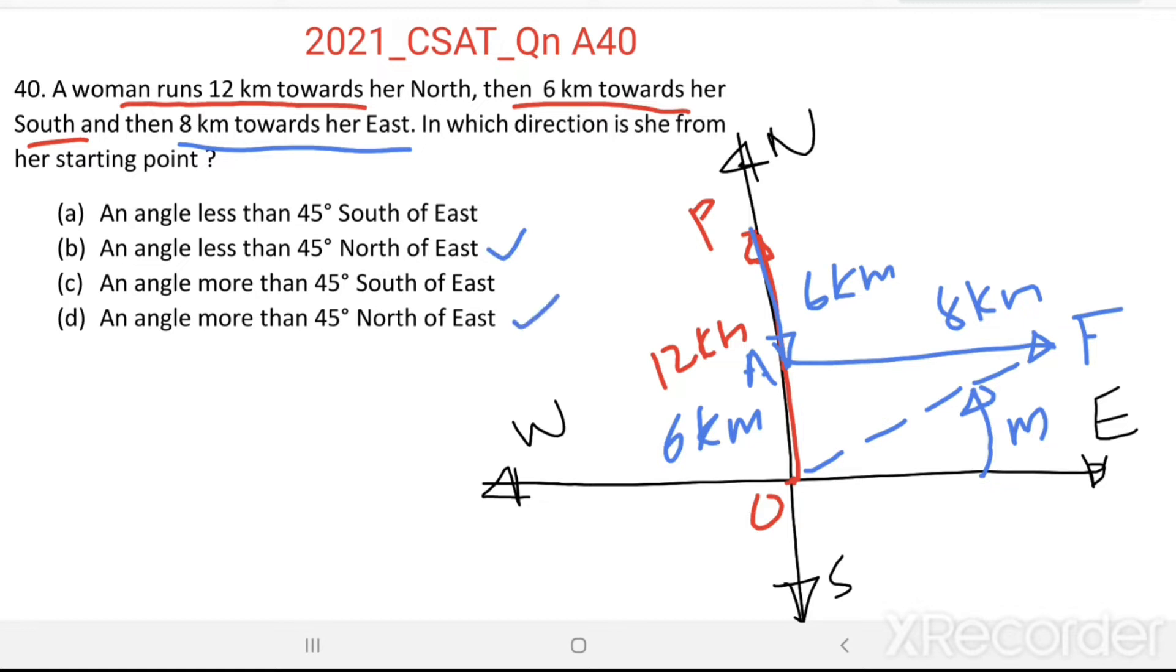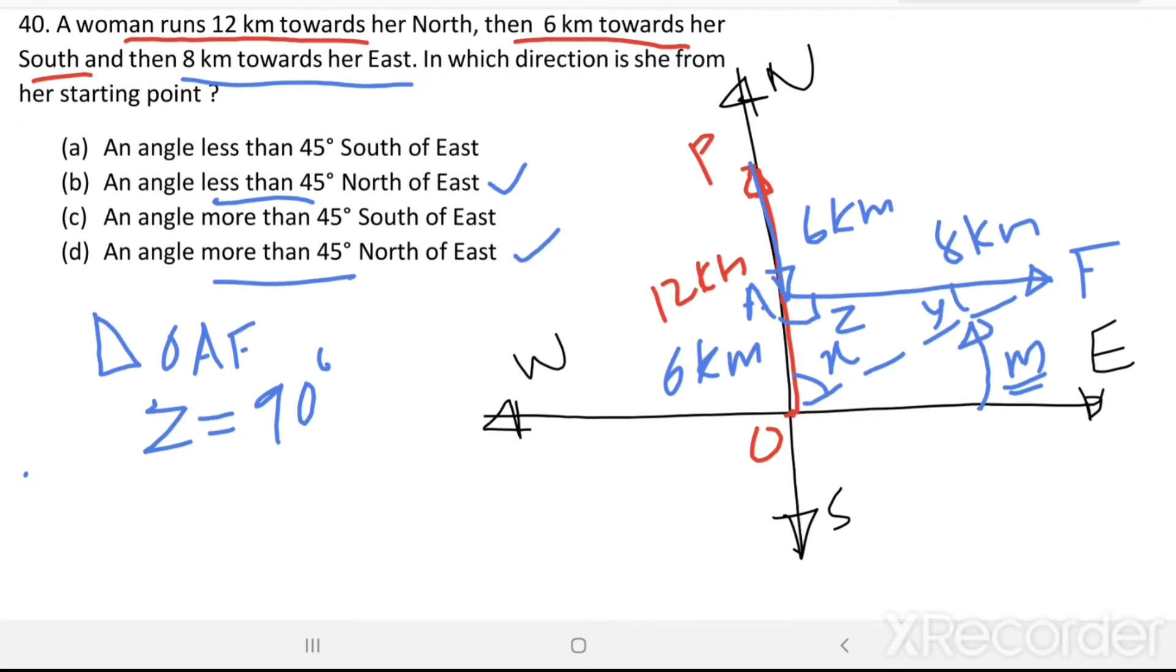Now we want to find this angle M, whether it is less than 45 or more than 45. For that, let us consider triangle OAF. Let us take angle AOF equal to X, angle AFO equal to Y and angle A equal to Z. Then it is a right-angled triangle, angle Z equal to 90 degree. Sum of angles of a triangle equal to 180 degree. That means, X plus Y plus Z equal to 180 degree.